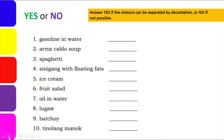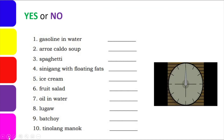The next activity is a yes or no activity. Answer yes if the mixture can be separated by decantation, and no if it cannot. The items are: gasoline in water, arroz caldo soup, spaghetti, sinigang with floating fats, ice cream, fruit salad, oil in water, lugaw, batchoy, and number 10 — tinolang manok. The timer is set for 60 seconds but will be run for 15 seconds in this tutorial.